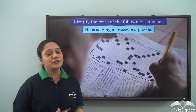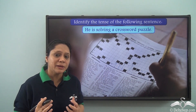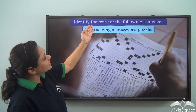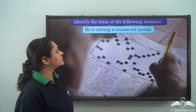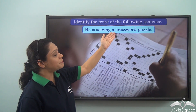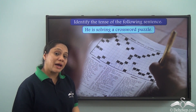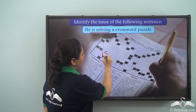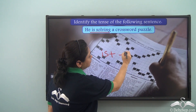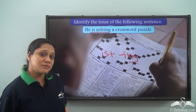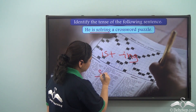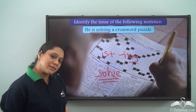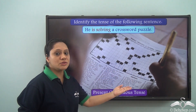By now the different kinds of present tenses should be extremely clear. Let us do some exercises. Identify the tense of the following sentence: "He is solving a crossword puzzle." The verb has the form "is" and the -ing form of the base verb. The base verb is "solve." So this sentence is in the present continuous tense.